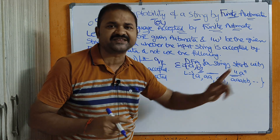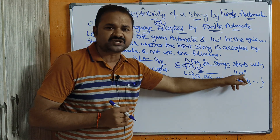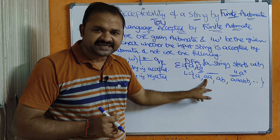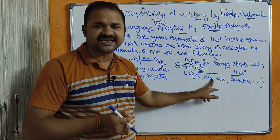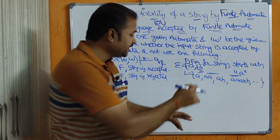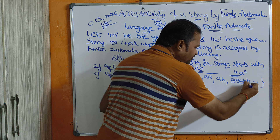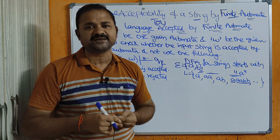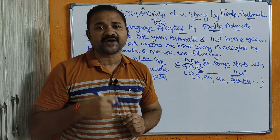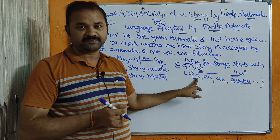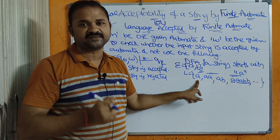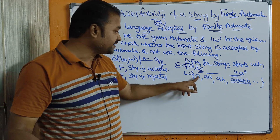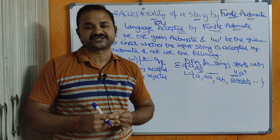Our target is designing a DFA for strings starting with 'a'. The alphabet contains two symbols: a and b. The minimum string in the language is just 'a'. After 'a', we can have any number of a's and b's. To determine how many states are needed, we take the length of the minimum string, which is 1, and add 1 — so we need two states.